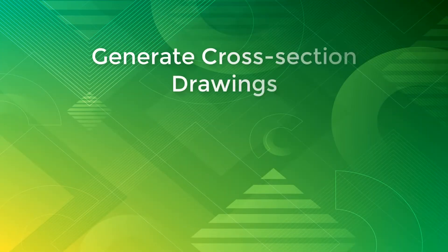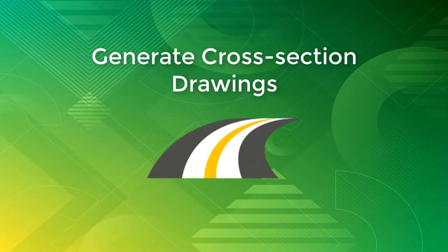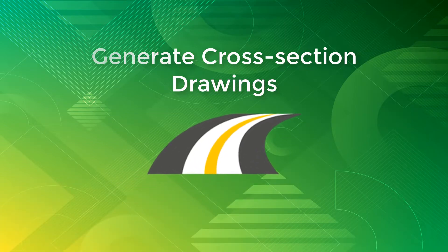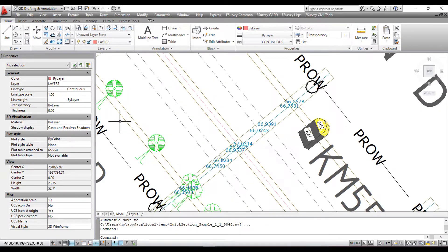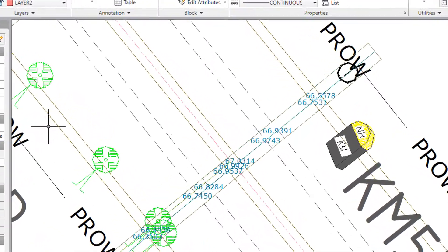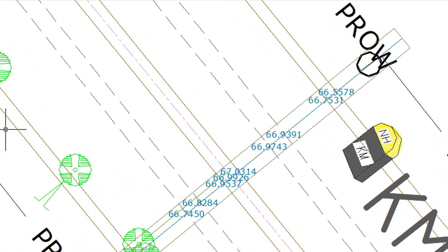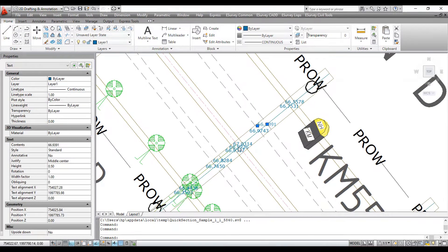Hello everyone. Welcome to the video tutorial about how to generate cross-section drawings in the Quick Sections module of eSurvey Civil Tools. In this tutorial, you will learn to generate cross-section drawings by referring to spot levels representing cross-sections along an alignment.